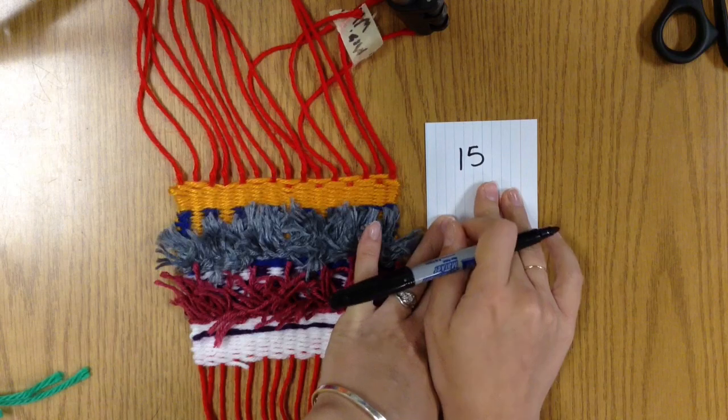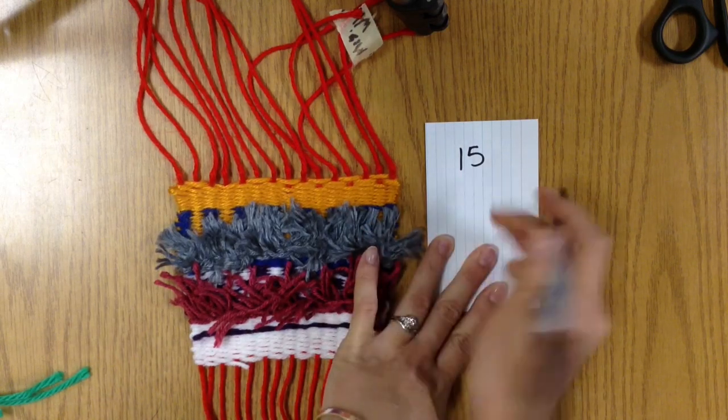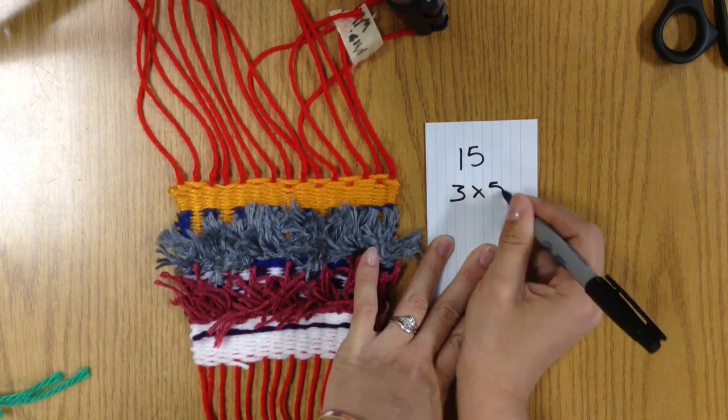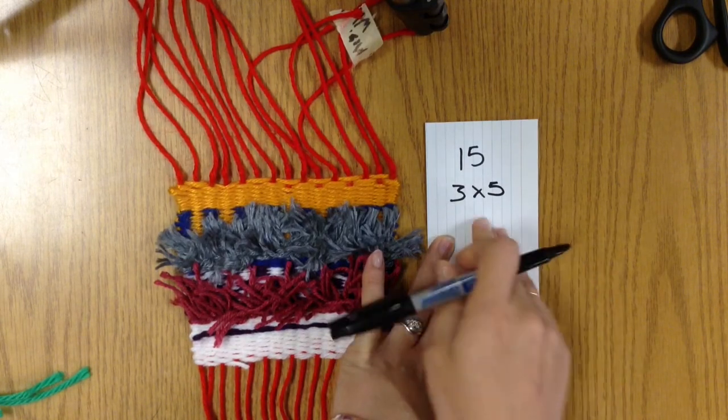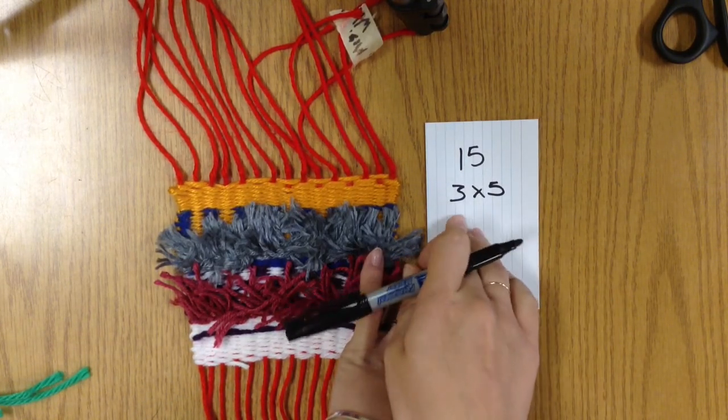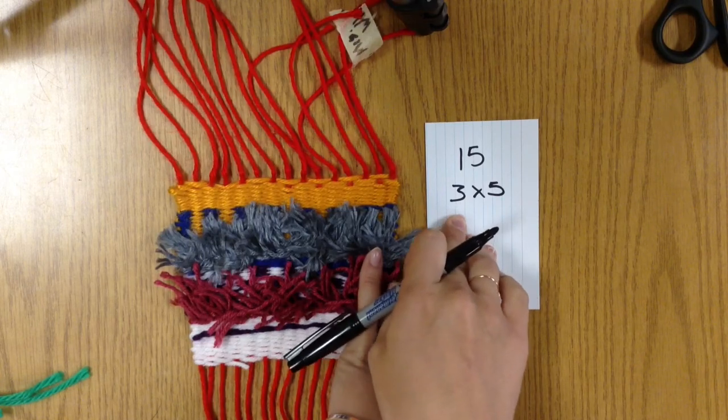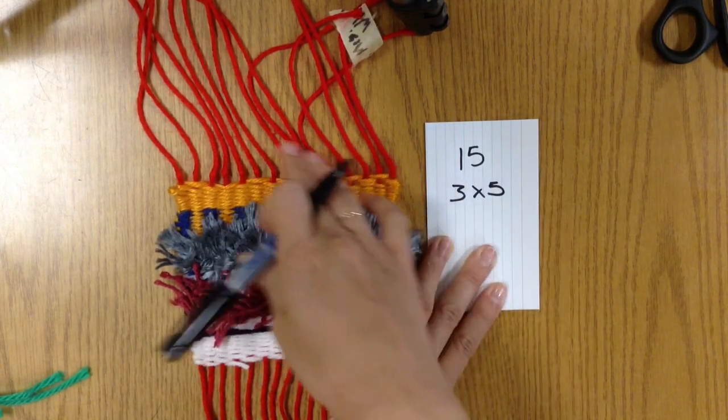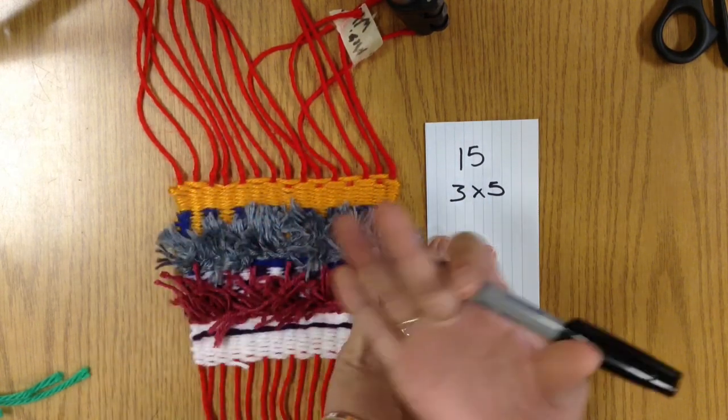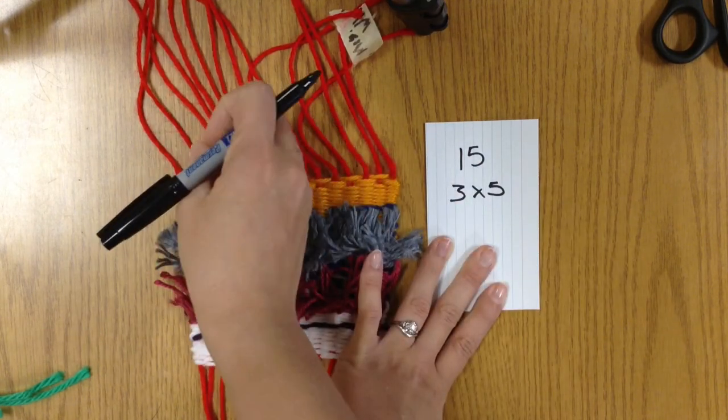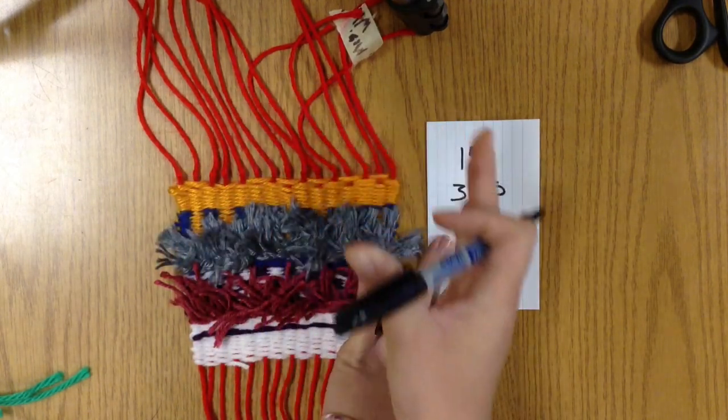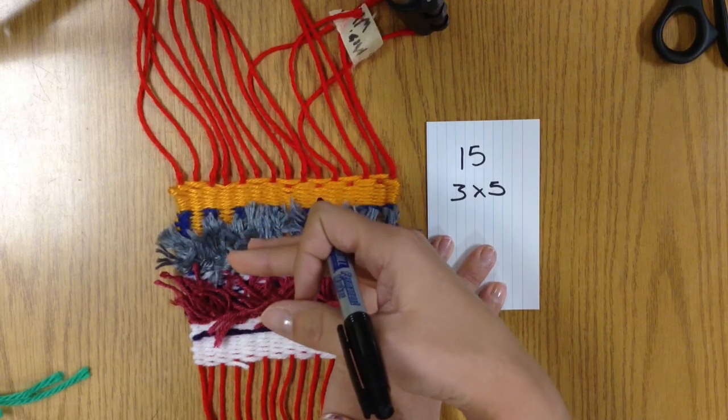And I know from the multiplication table that 3 times 5 equals 15. So I'm thinking that if I did 3 strings and tied them in a bundle I would have 5 different knots going across. The other side of this is I could do 5 strings at a time and just have 3 knots, but that's going to really pull it really tight together.